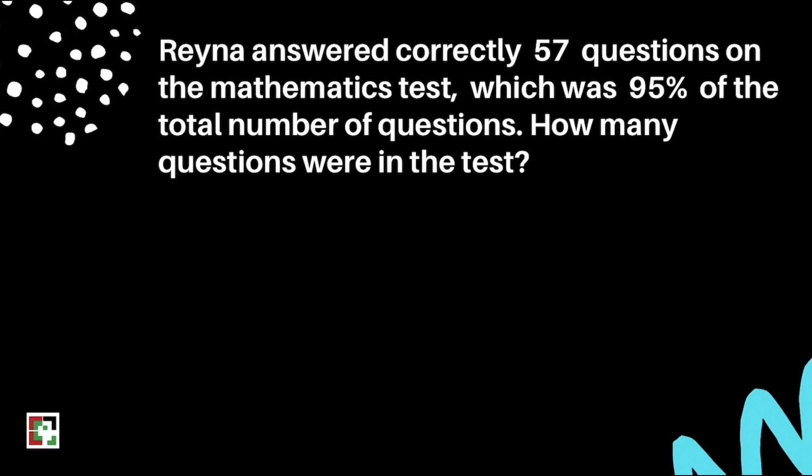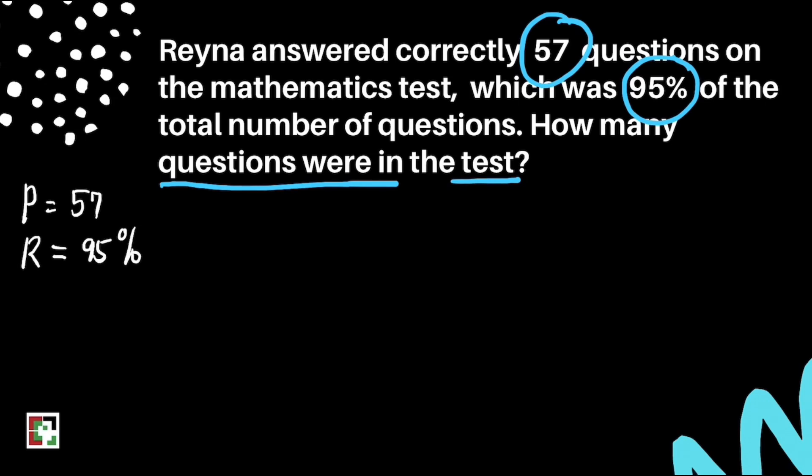Next question. Reina answered correctly 57 questions on the mathematics test, which was 95% of the total number of questions. How many questions were there in the test? We have to identify our given. We have 57 questions, 95%, and we're looking for the total number of questions in the test. Our P is 57, our rate is 95%, and we're looking for the base.